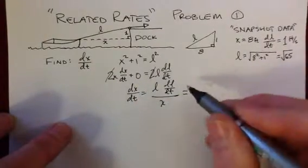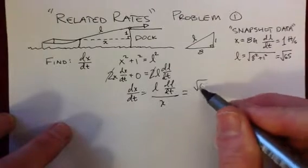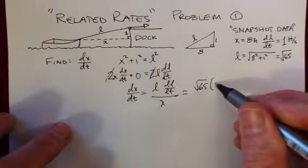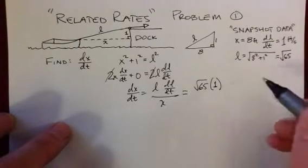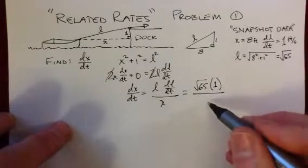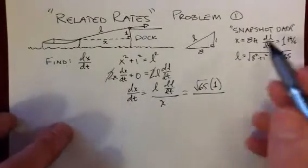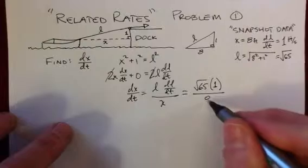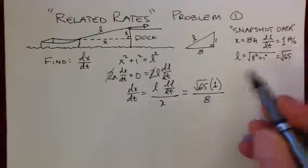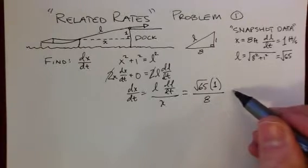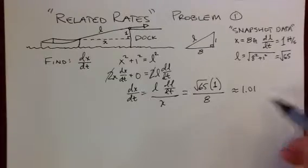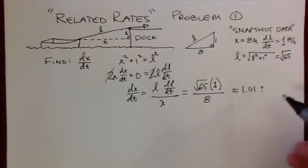Well, what is that equal to? L is exactly radical 65. dl dt is the rate at which I'm pulling the rope, which could be another number, but in this case, it's a boring 1. And it's all over than the distance at the snapshot moment of 8. So you'll see radical 65 is just a little bit more than 8. So when you're dividing by 8, timesing it by 1, you get something that's very close to like 1.01.